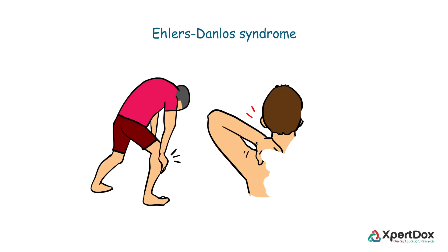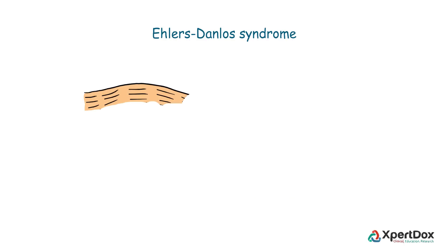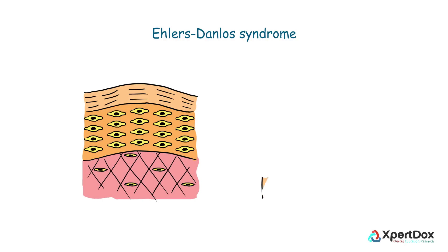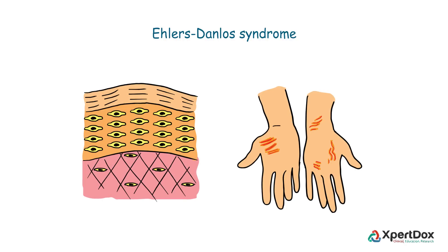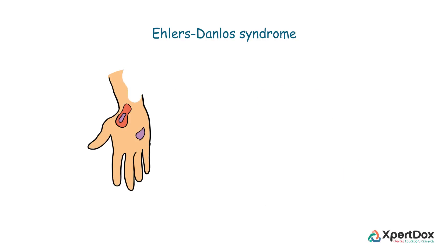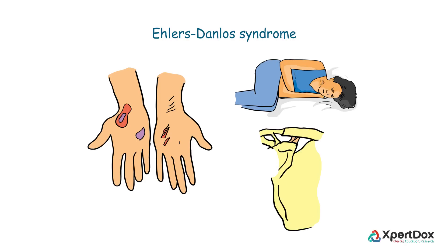Widespread and bone-deep aching pain is a core concern for almost every patient. In some forms, abnormal collagen causes cigarette paper scarring because the skin may appear extremely thin and wrinkled like tissue paper. There can be issues of abnormal bruising and bleeding, tissue fragility, hollow organ rupture, and frequent joint dislocations.